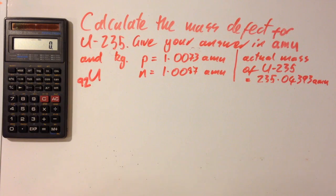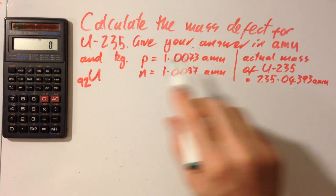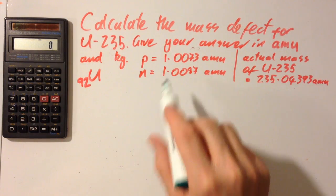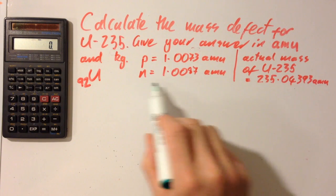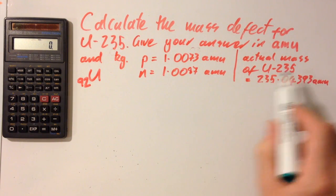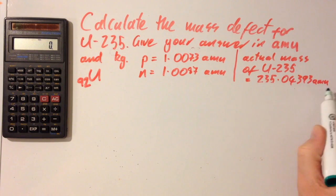So calculate the mass defect for Uranium-235, give your answer in AMU and kilograms. That's the mass of a proton, that's the mass of a neutron, and that's the actual mass of the Uranium-235 nucleus.